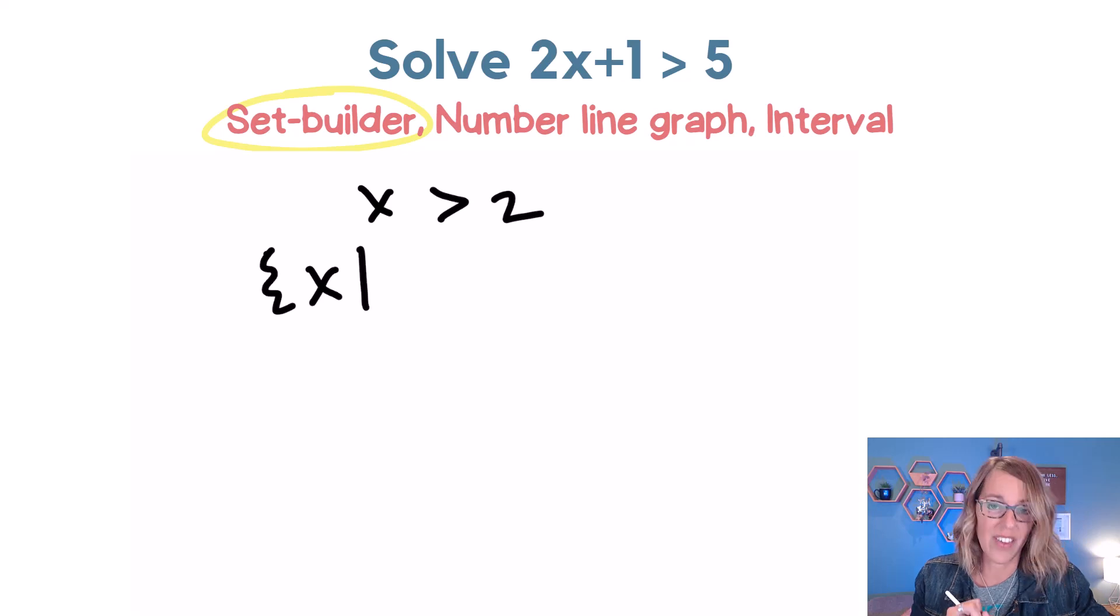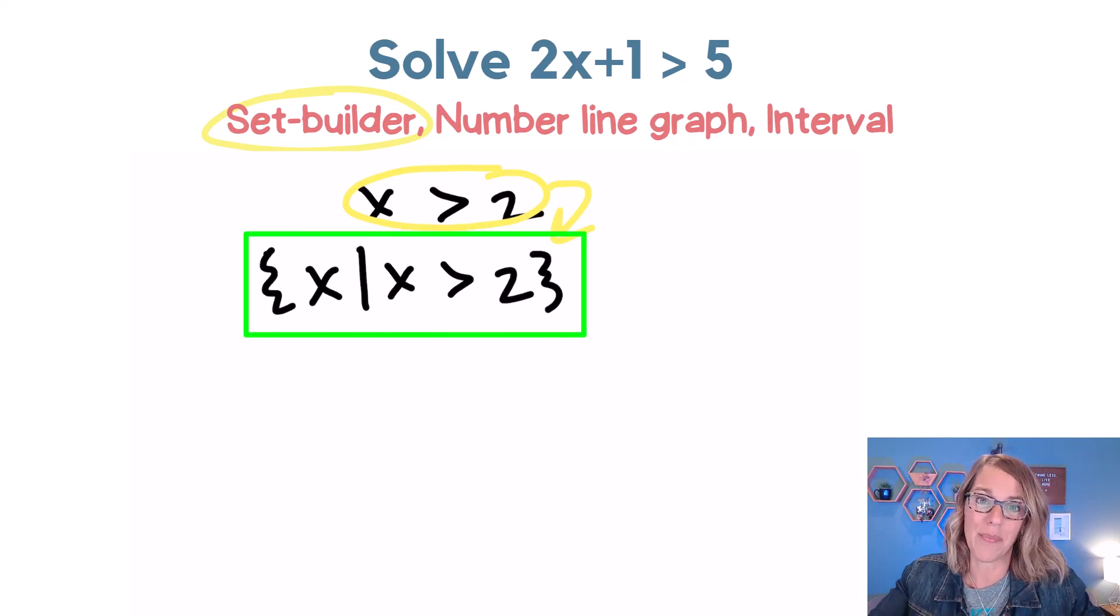I'm actually just going to drop it around my answer. So it's going to be the set bracket, the set of all x's, and the vertical line means such that. And I'm just going to drop my inequality right into my set: x is greater than 2. So that's all we need to do for set builder notation.